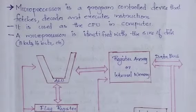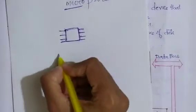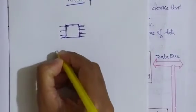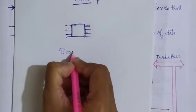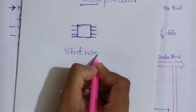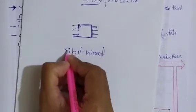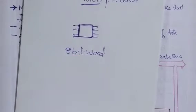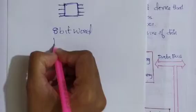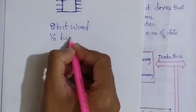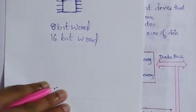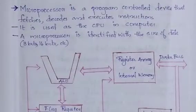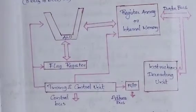An 8-bit microprocessor uses an 8-bit word, and a 16-bit microprocessor uses a 16-bit word. Now, coming to the figure.